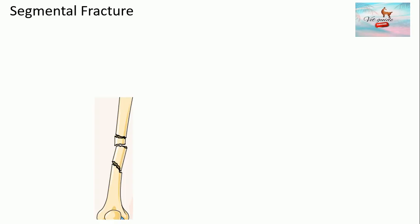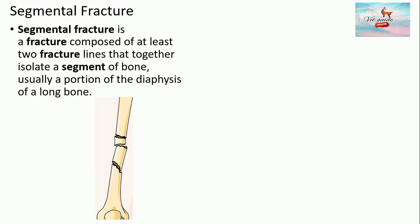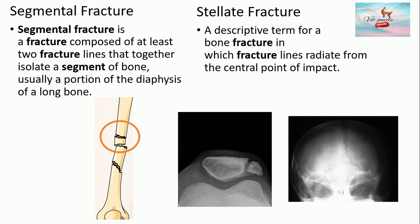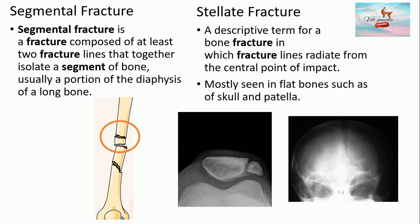A segmental fracture is composed of at least two fracture lines that together isolate a segment of bone, as seen in the image. In this type, usually a portion of the diaphysis of a long bone is involved. A stellate fracture is a descriptive term for a bone fracture in which fracture lines radiate from the central point of impact. It is mostly seen in flat bones such as those of the skull and patella.